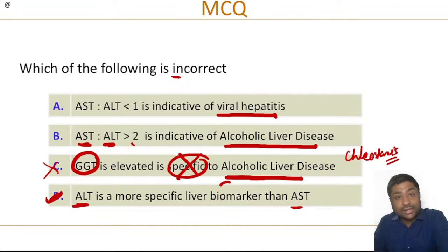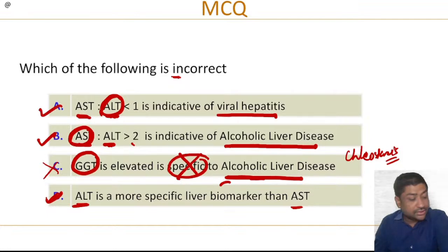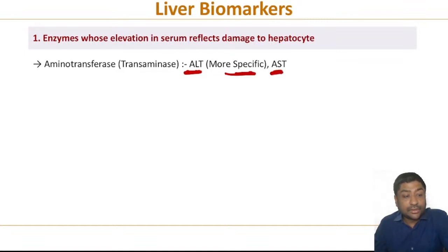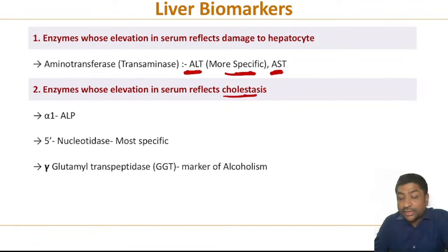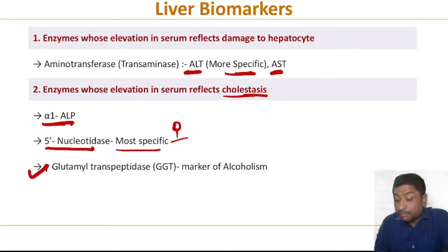AST:ALT greater than one is indicative of alcoholic liver disease — correct, because AST is more elevated in alcoholic liver disease. AST:ALT less than one is indicative of viral hepatitis because ALT is more specific for hepatitis — also correct. So the correct answer is C. Specifically, ALT is more specific than AST for hepatocyte damage. Enzymes increased in cholestasis: gamma-GGT, 5'-nucleotidase, and alkaline phosphatase — all three are increased. And the most specific marker for cholestasis is 5'-nucleotidase.